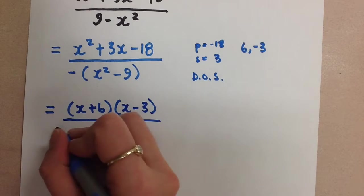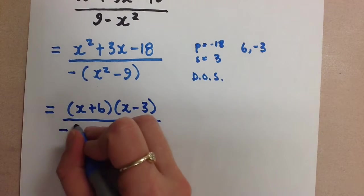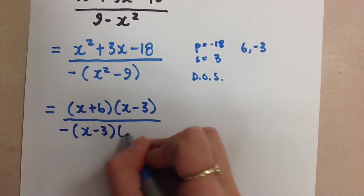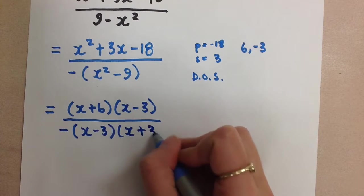And in our denominator, remember that we still have that negative, and then the difference of squares is going to make this x minus 3 and x plus 3.